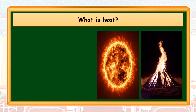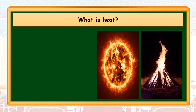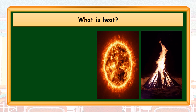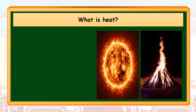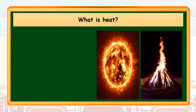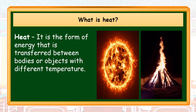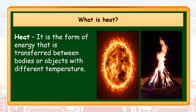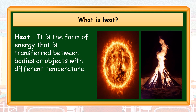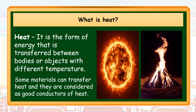Both sun and bonfire emit heat. The sun is considered as the universal source of heat, and its heat travels through space by electromagnetic radiation. Bonfire is a temporary source of heat in places with cold temperature. Heat is the form of energy that is transferred between bodies or objects with different temperatures. Some materials can transfer heat and they are considered as good conductors of heat.